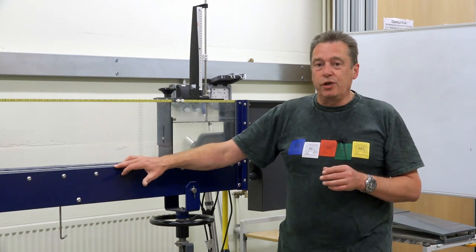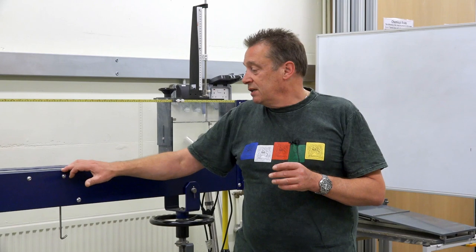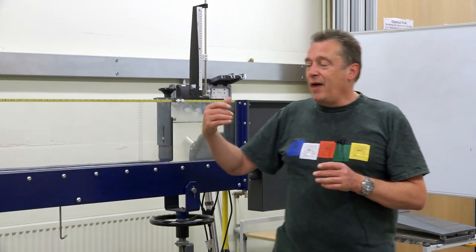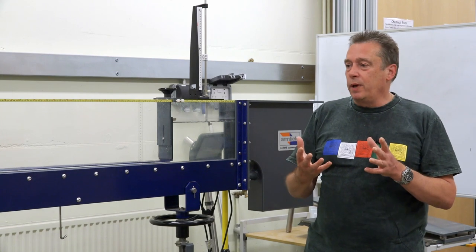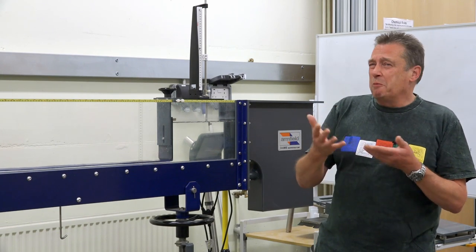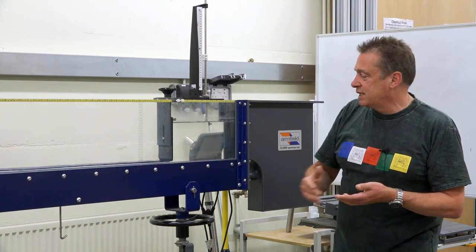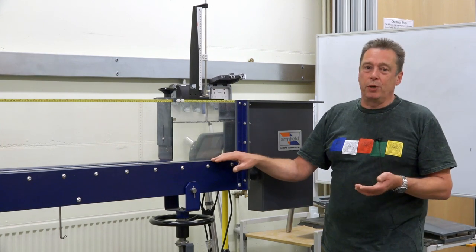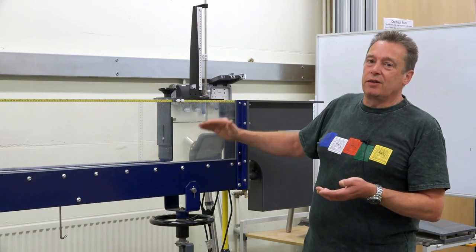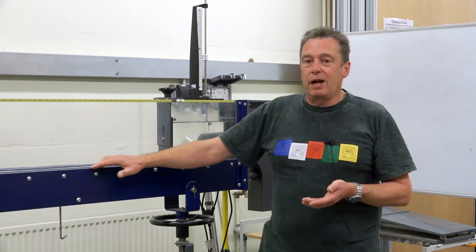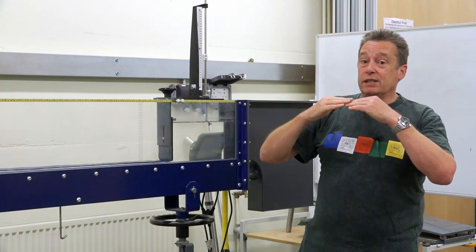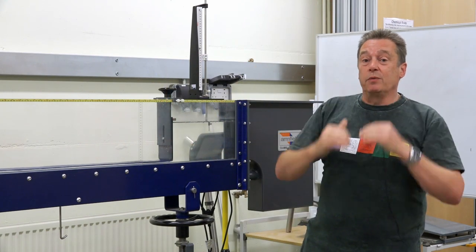In here you've got supercritical flow, which is very shallow and fast-moving with a Froude number way above one, maybe about 4.6. This one is maybe about 0.02. Basically, the deeper and slower it is, the lower the Froude number; the shallower and faster, the higher the Froude number, with the median being one.